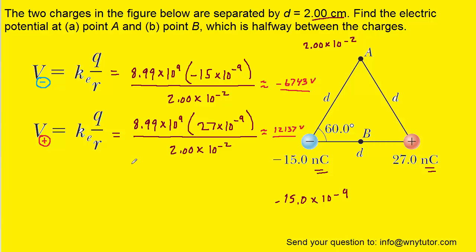To get the total potential at point A, all we have to do is add the two values together. And when you do that, you get roughly 5,394 volts as the correct answer to part A. That is the total electric potential at point A.